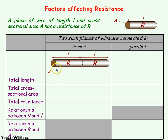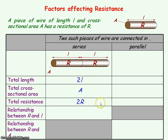If we connect two identical such pieces of wire together in series, the total length will now be 2L. It still has the same cross-sectional area A, and since resistance adds in series, the total resistance will be 2R. So we've doubled the length and doubled the resistance, meaning resistance and length are directly proportional to each other — they increase by the same ratio, provided the cross-sectional area is kept the same.